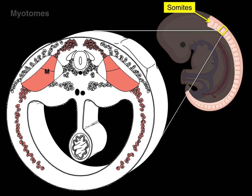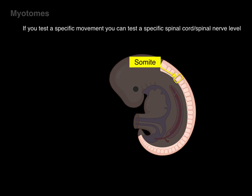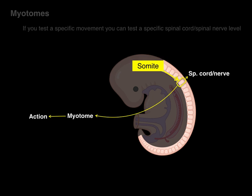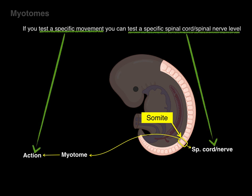As that skeletal muscle migrates out, at every level there is an associated spinal cord level that has a motor neuron sending its axon out to innervate that group of muscles. So if you test a specific movement, you can test a specific spinal cord and spinal nerve level. One somite at that level gives rise to dermatomes, myotomes, and sclerotome. That myotome has a group of muscles that provides an action associated with a specific spinal cord level — at that level, and that level, and that level. So testing a specific movement tests a specific spinal cord and spinal nerve level.